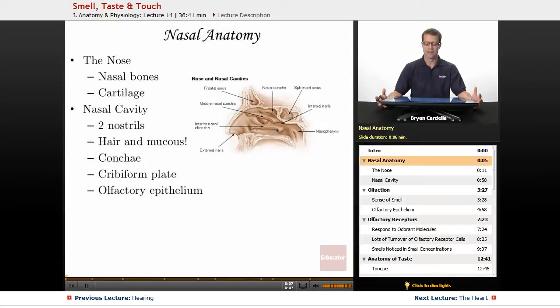When we look at nasal anatomy, this main structure of the body that's involved with smelling, of course there's the nose. That's the most obvious part. It's made up of skin, cartilage, a little bit of fat in there.